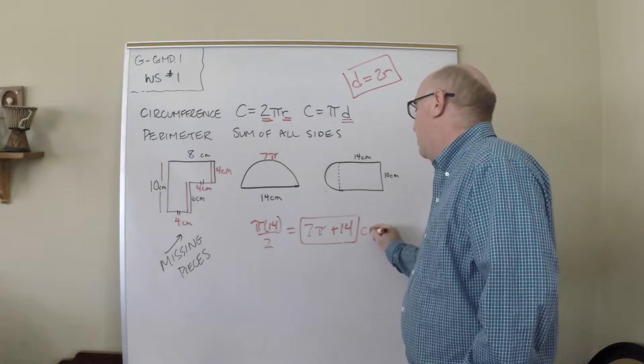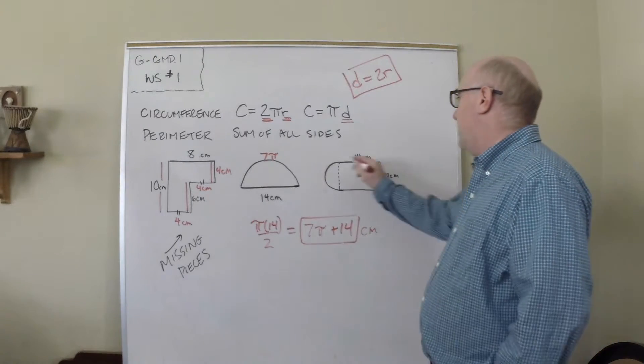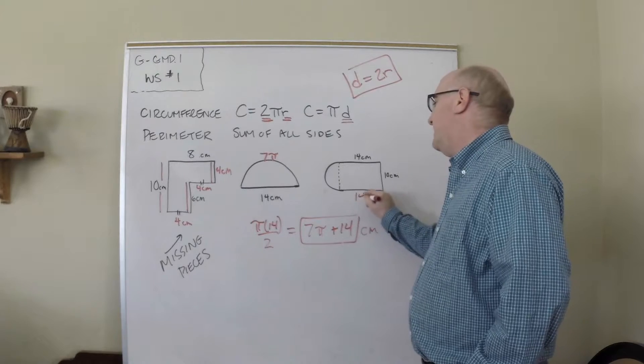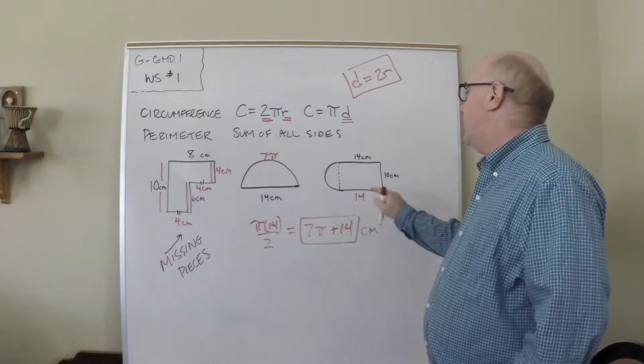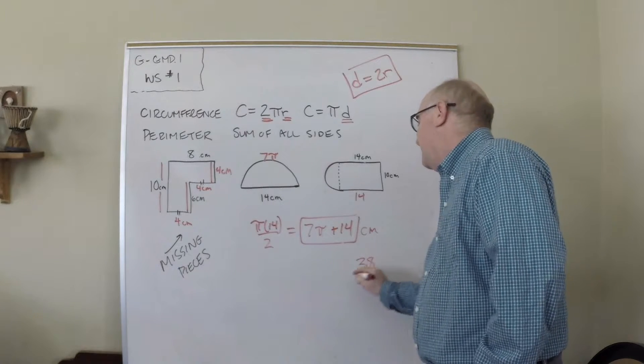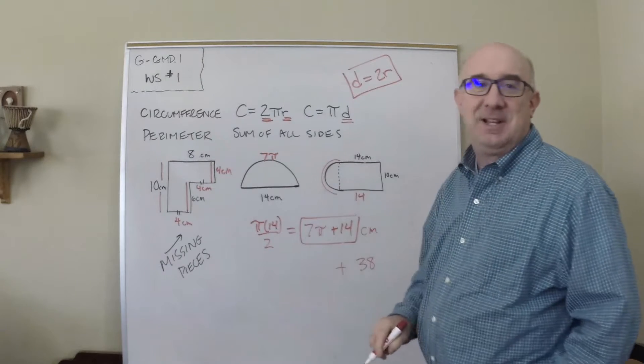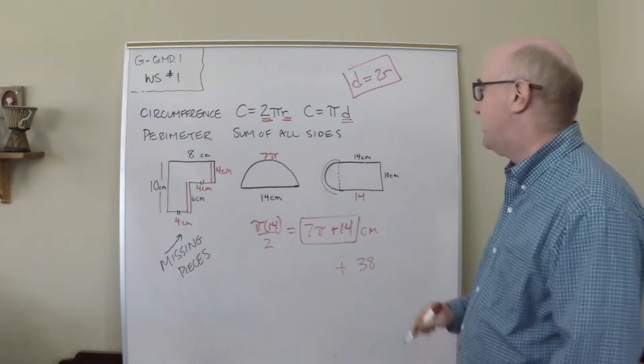Over here, the same kind of problem exists. You have a 14, a 10, that would make another 14 here. So if you add all of that—28, 38—this one would be 38 in that part.